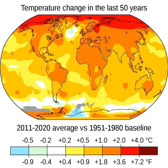Policy decisions that rely on carbon dioxide removal increase the risk of global warming rising beyond international goals. Adaptation is the process of adjustment to current or expected changes in climate and its effects. Without additional mitigation, adaptation cannot avert the risk of severe, widespread, and irreversible impacts. More severe climate change requires more transformative adaptation, which can be prohibitively expensive. The capacity and potential for humans to adapt is unevenly distributed across different regions and populations, and developing countries generally have less. The first two decades of the 21st century saw an increase in adaptive capacity in most low- and middle-income countries with improved access to basic sanitation and electricity, but progress is slow.